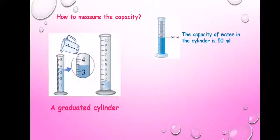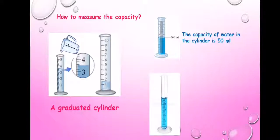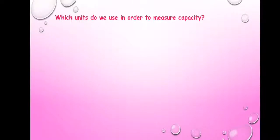So the capacity of water in this cylinder is 50 milliliters. Another cylinder: the capacity of water in this cylinder is 10 milliliters. So what units do we use in order to measure capacity?